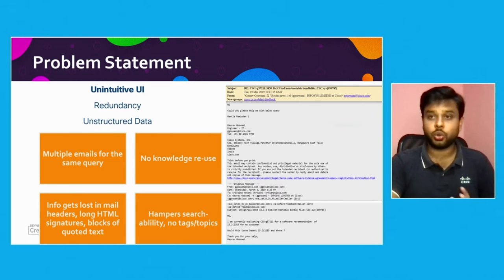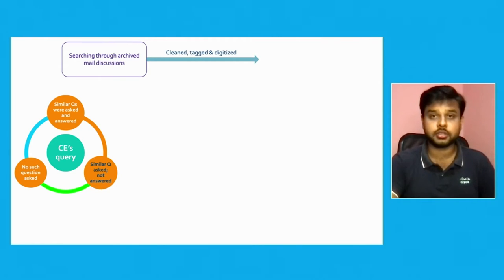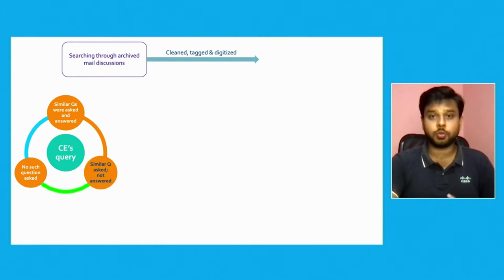This is the overall problem statement — inter-department communication challenges in understanding issues. Here comes Skybridge to the rescue. Skybridge bridges between the consulting engineering team and the developer team. We have data in archived email communications but searching through it manually is difficult. The idea is to digitize that data — take all those archived emails, clean them by removing tags, signatures, and unwanted content, then tag the data using NLP (natural language processing) to extract just the questions and answers.